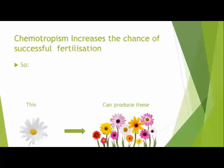Therefore, chemotropism increases the chances of successful fertilization. Hence, many species of plants will be produced.